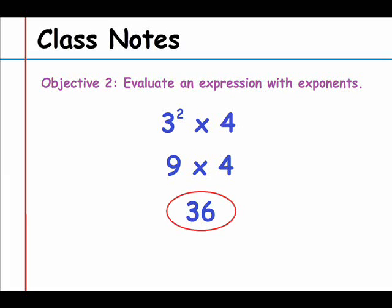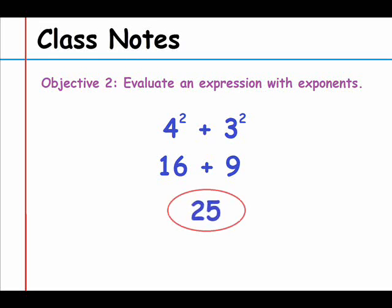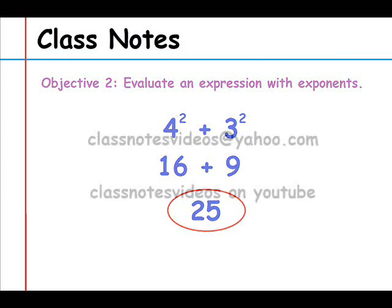Last example: 4 squared plus 3 squared. We have three operations in this expression — two exponents and an addition sign. We do the exponents first, then add at the end. 4 squared is 16, and 3 squared is 9, so we have 16 plus 9, which equals 25. That's the end of this video.